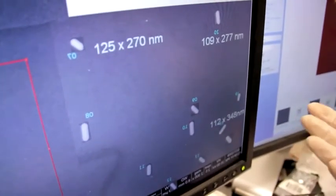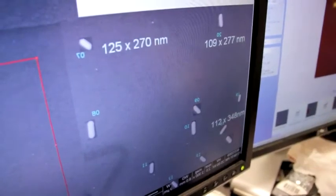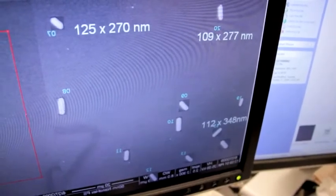This scanning electron microscope image shows a few of the nanorods, and you can see that there's quite some variation in their size, as well as some slight variations in the shape.